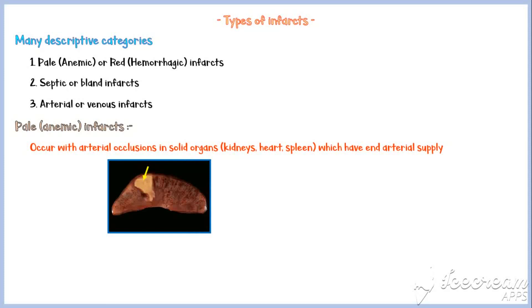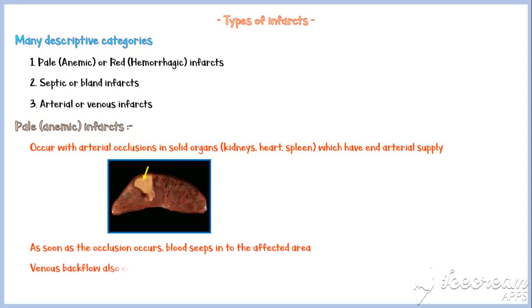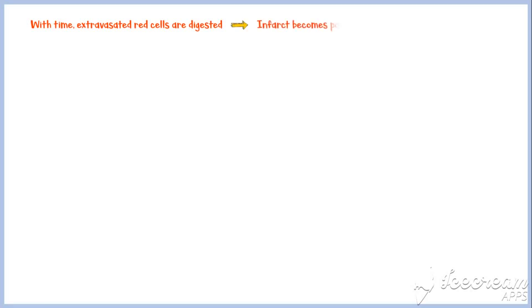This image shows a pale infarction in the spleen; the yellow arrow indicates the infarct. As soon as the occlusion occurs, blood seeps into the affected area and venous backflow also occurs, so the infarct is initially red in color. With time, extravasated red cells undergo enzymatic digestion and the infarct becomes pale. Ultimately, the infarcted area becomes fibrosed, and sometimes calcification may also occur.